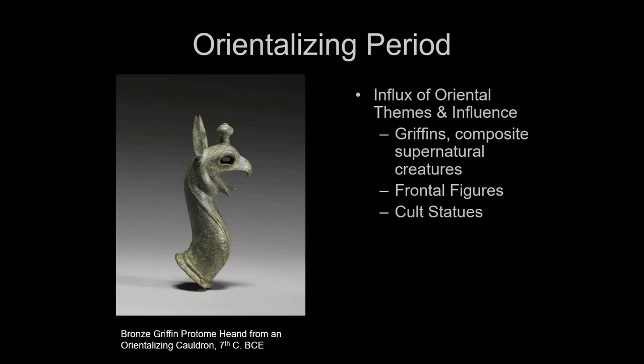From the geometric period we go to the Orientalizing period, where we see an influx of themes from the Near East — the Eastern Mediterranean: Phoenicians, Canaanites, a little Egypt, but mostly Assyria, Persia, and Babylon. We're going to see griffins, composite supernatural creatures, frontal figures, and cult statues. One of the biggest things we see are cauldrons, used to pour libations as offerings to the deceased, ancestors, or gods, often with very elaborate decorations.